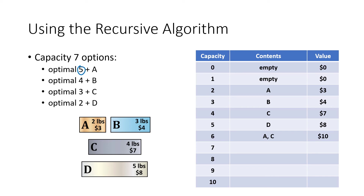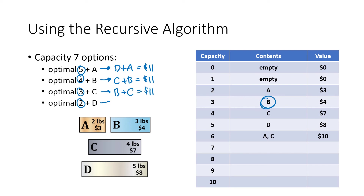For capacity seven, subtracting each weight from seven gives remainders five, four, three, and two. The optimal five-pound (D) plus A = eleven dollars. The optimal four-pound (C) plus B = eleven dollars. The optimal three-pound (B) plus C = eleven dollars. The optimal two-pound (A) plus D = eleven dollars. It's a four-way tie at eleven dollars, so I'll record B and C — both combinations are equally valid at eleven dollars.